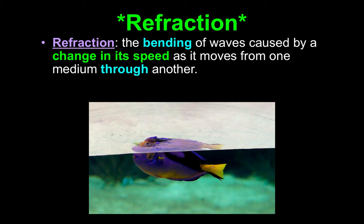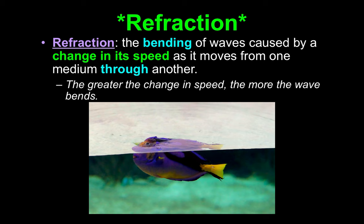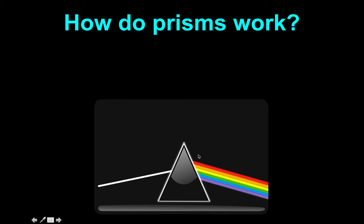Refraction — this was also a station. Refraction is the bending of a wave caused by a change in its speed as it moves from one medium through another. Can you think of a station where you looked at something and it looked bent? You should be thinking of station two — that's where we had a straw in water and a straw in jello. The greater the change in speed, the more the wave bends. Your straw should have looked bent, and one looked more bent than the other because there was a greater change in speed in that medium.